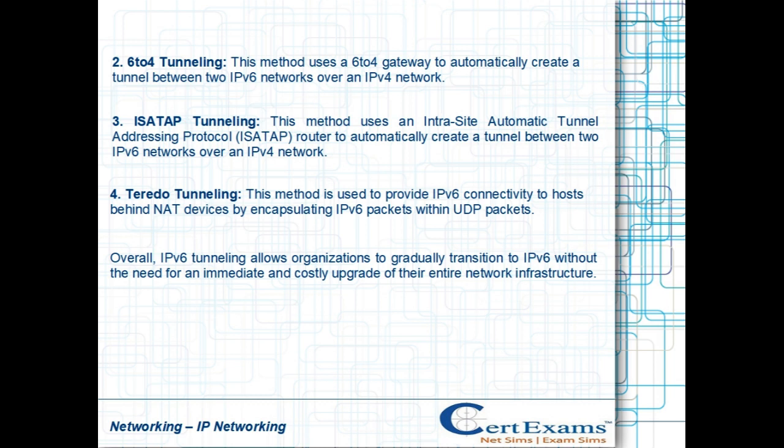ISATAP tunneling uses an Intrasite Automatic Tunnel Addressing Protocol (ISATAP) router to automatically create a tunnel between two IPv6 networks over an IPv4 network.